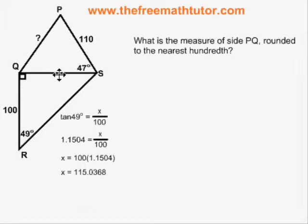Now that we know side QS, we look at the upper triangle PQS and we realize that we have two sides and the included angle. This is a cosine law situation. We don't have enough information to do sine law.